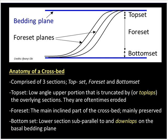The foreset, on the other hand, is actually the main part of the crossbed, which is usually preserved, makes up a huge portion of the crossbed, and has the highest amount of inclination relative to the underlying units. The bottom set is, for the most part, subparallel to the basal bedding plane, and it kind of overlaps onto the basal bedding planes.